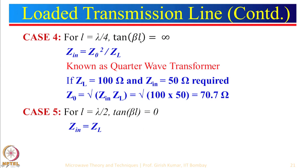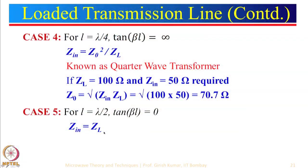Case 5: half-wave line, l = λ/2. When l = λ/2, tan(βl) = 0, so Zin = ZL. The input impedance equals the load impedance, independent of the characteristic impedance of the line. This was used in a series-fed microstrip antenna array where a λ/2 length provided a 180° phase shift, while at the same time keeping the input impedance equal to the load impedance.